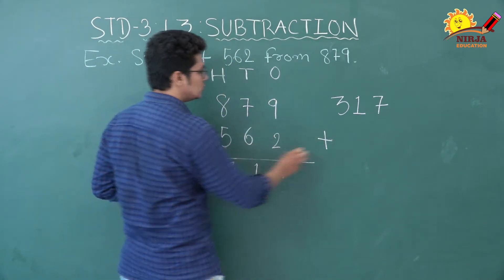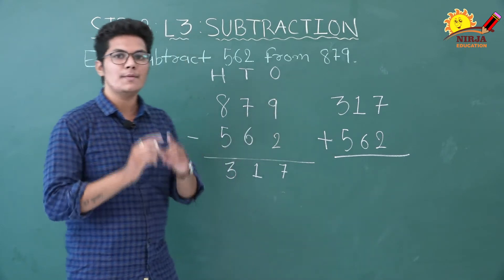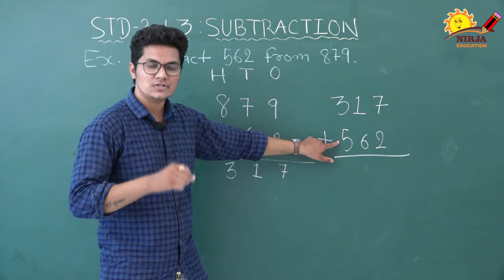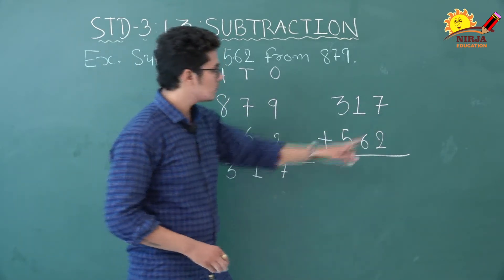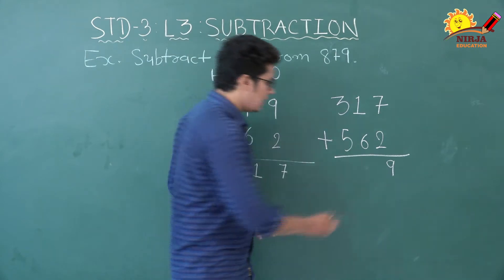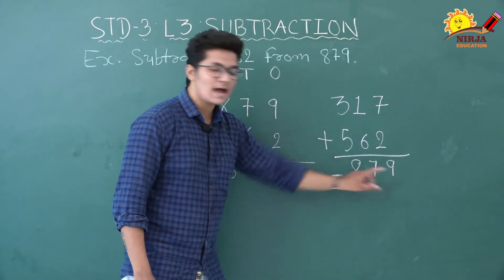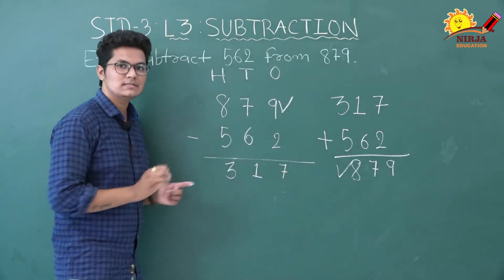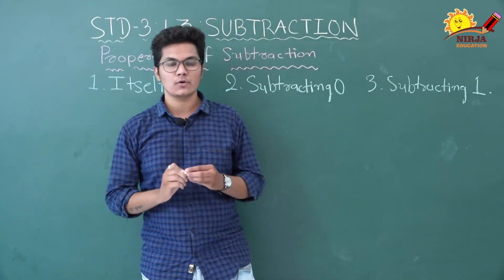We will add the smaller number, which is 562, to our difference 317. If we add these two and we get the bigger number, it means our answer is correct. So let's start from ones place: seven plus two is nine, one plus six is seven, three plus five is eight. Our answer is 879, and the greater number is also 879. Both are same, so our answer was correct!